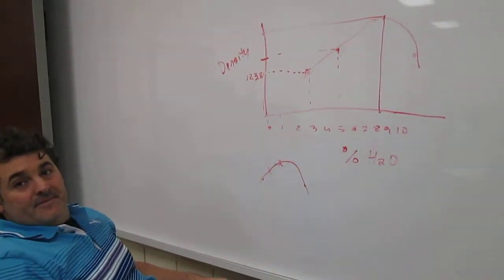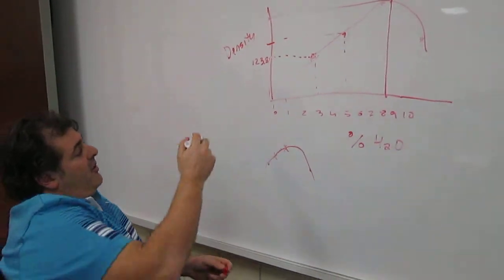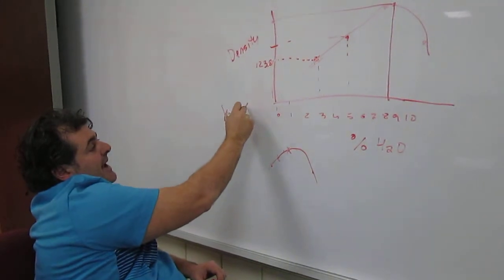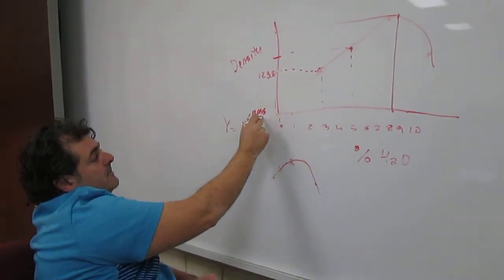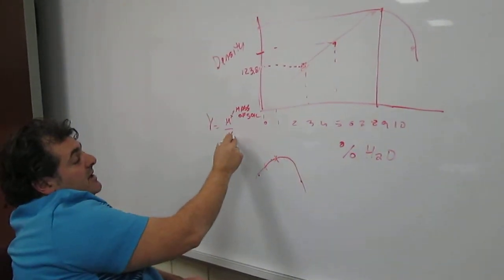Does that make sense? And all we did before is, in order for us to get the density, we did mass of the volume. This is the mass of the soil after compaction, and then this is given.